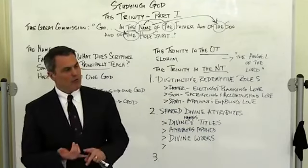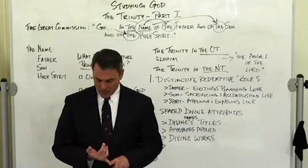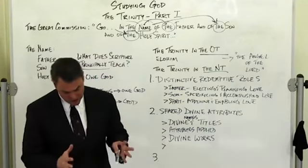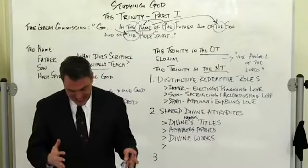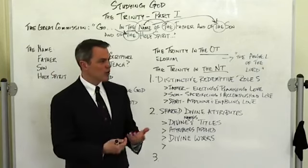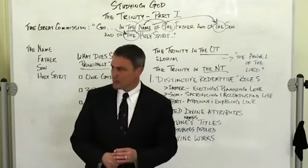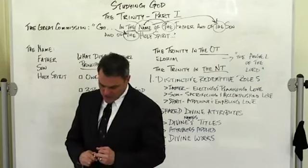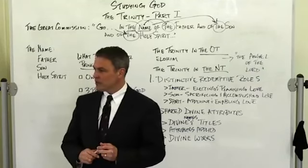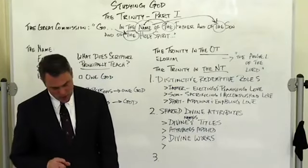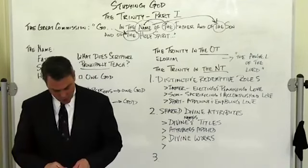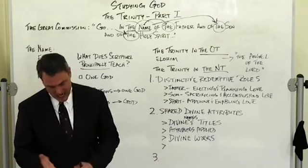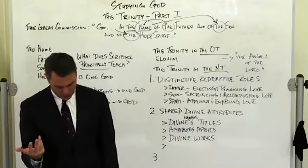Let me give you just a couple. Colossians chapter 1, 'for by Him,' that is Christ, 'for by Him all things were created in heaven and on earth, visible and invisible, whether thrones or dominions or rulers or authorities, all things were created through Him and for Him, and He is before all things, and in Him all things hold together.' Those divine works are attributed to whom? To Christ. Or think about Hebrews, the first three verses of Hebrews. 'Long ago, many times, and in many ways, God spoke to our fathers by the prophets, but in these last days,' who has God spoken through? 'By His Son, whom He appointed the heir of all things, through whom also He created the world.'